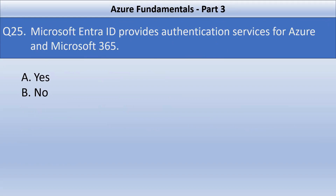Question number 25. Microsoft Entra ID provides authentication services for Azure and Microsoft 365. You need to tell whether this statement is right or wrong. This is a correct statement. It provides services such as single sign-on, multi-factor authentication, and conditional access, ensuring secure and streamlined access to resources across Azure and Microsoft 365 ecosystems.